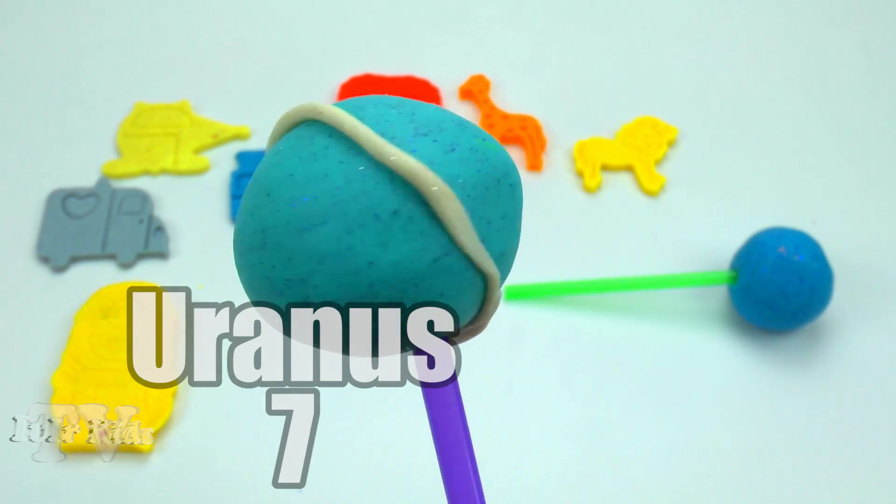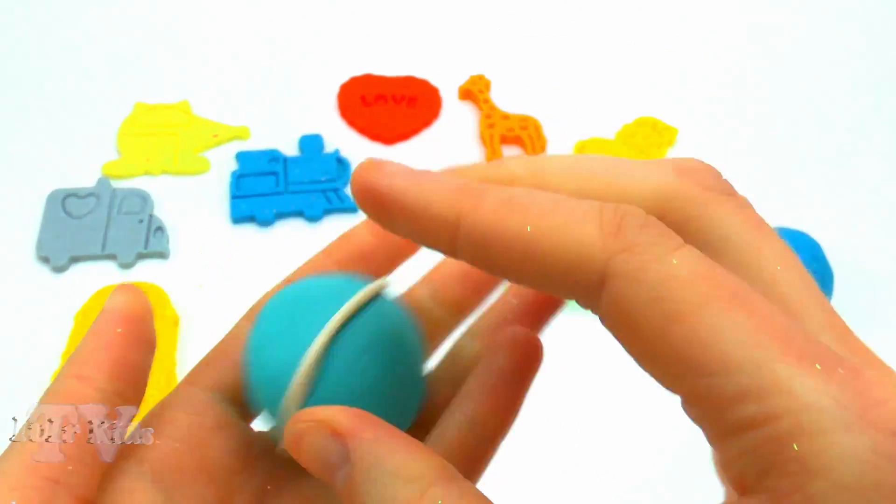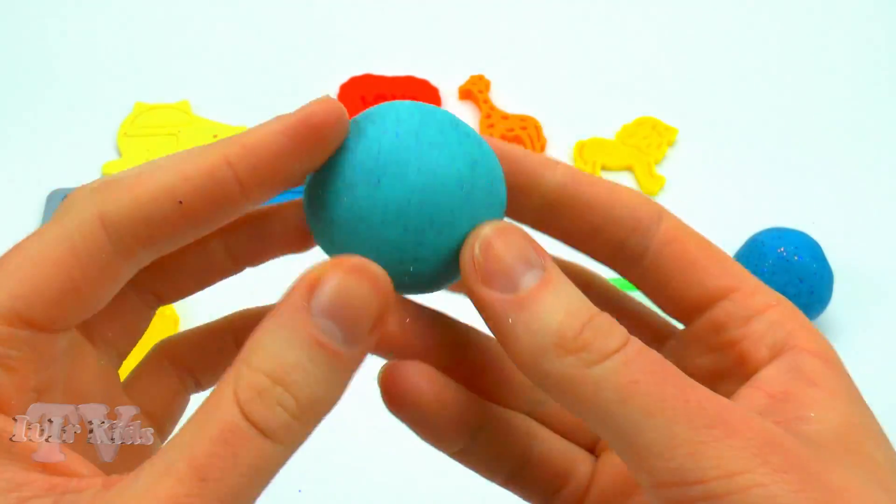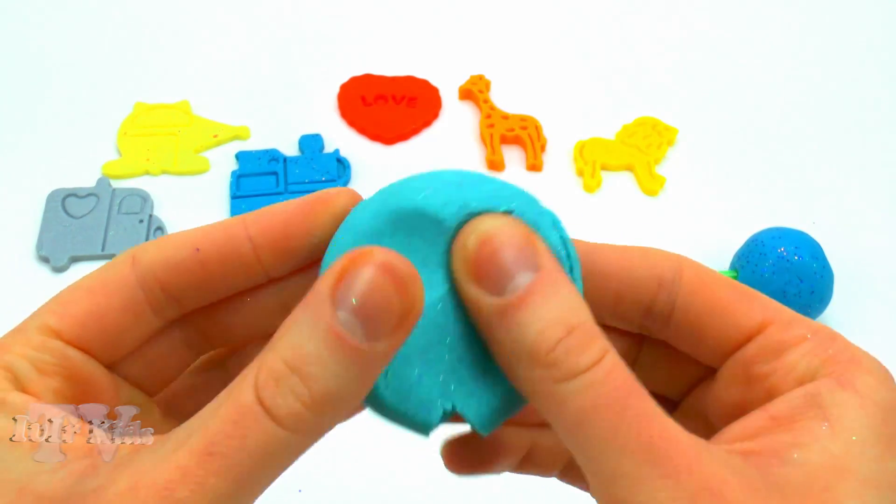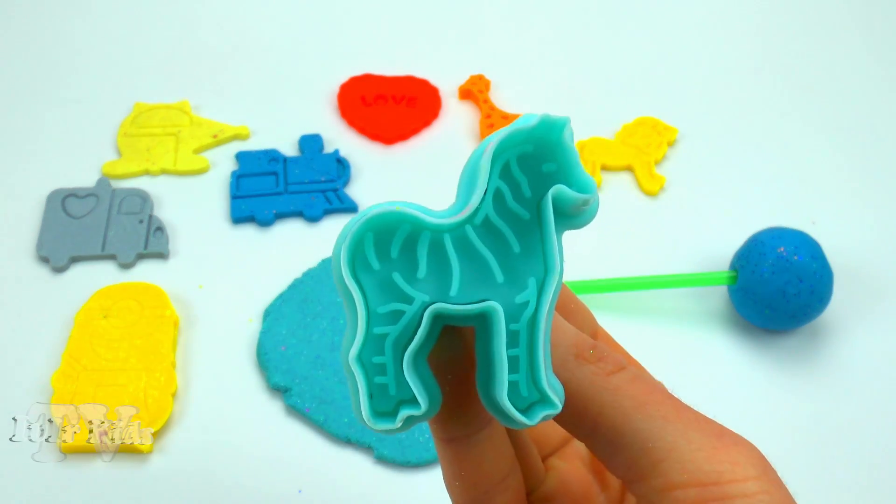Uranus. Uranus is the planet of the solar system, the seventh in distance from the Sun. It was opened in 1781 and is named after the Greek god of the sky of Uranus. Uranus was the first planet discovered in modern times and with the help of a telescope.